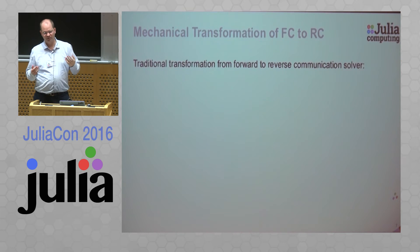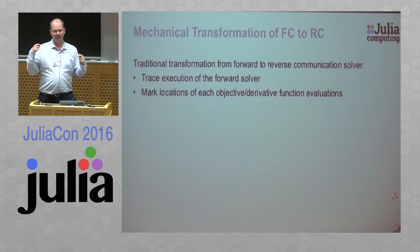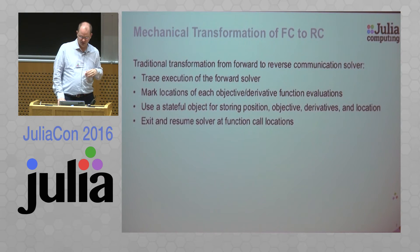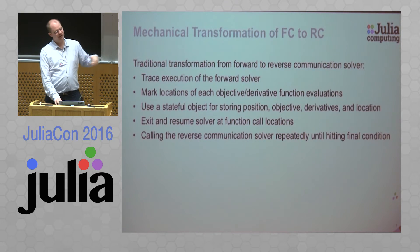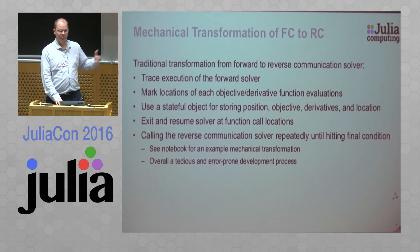One way to transform a forward communication solver to a reverse communication solver is a very mechanical process where you trace the execution of the forward solver, find the location where every objective function or derivative function is evaluated, then use some type of stateful object storing the position within the solver, the objective function and derivative values, and your current location. You exit as needed from the forward communication solver, evaluate your function, and then return in, calling the solver repeatedly until you hit your exit condition. Overall, it's kind of an error-prone and tedious development process.